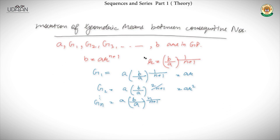We can also insert geometric means between two numbers. If we insert n geometric means G1, G2, ..., Gₙ between a and b, the resulting sequence a, G1, G2, ..., Gₙ, b is a GP with (n+2) terms. Here b = a·r^(n+1), so r = (b/a)^(1/(n+1)). Intuitively, we divide the last term by the first term and make n+1 partitions. From this common ratio, we can derive formulas for G1, G2, and so on to obtain all n geometric means.